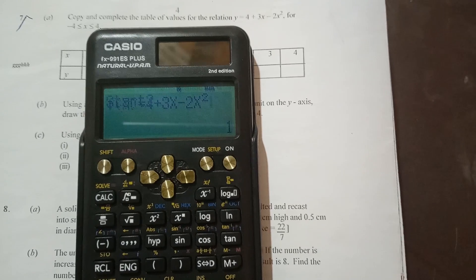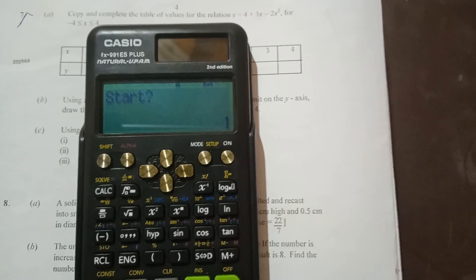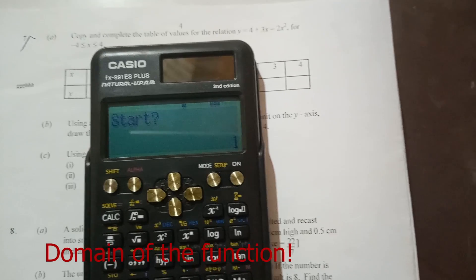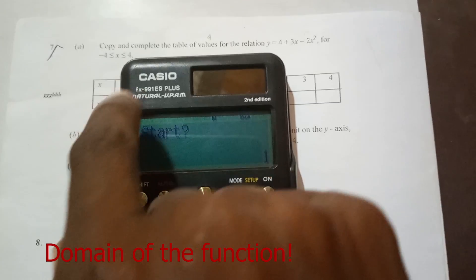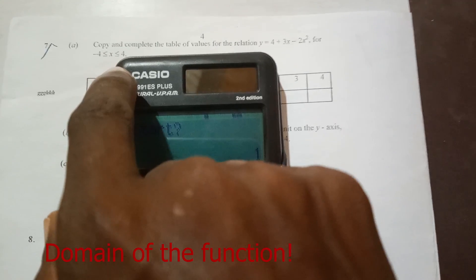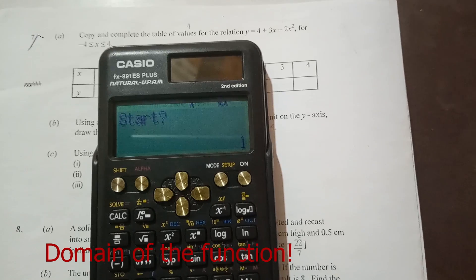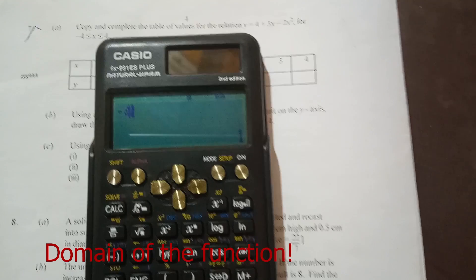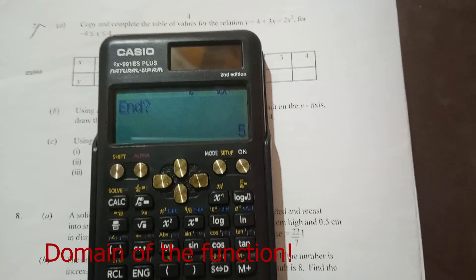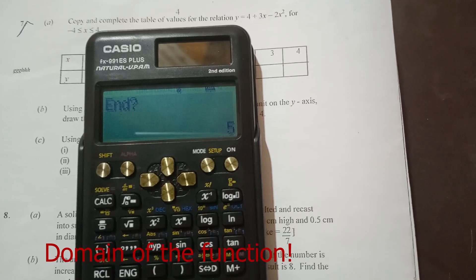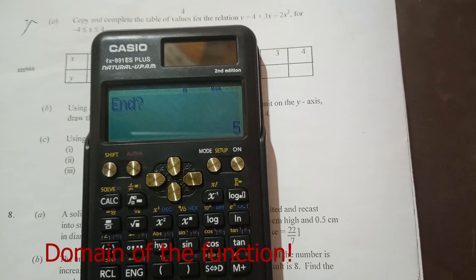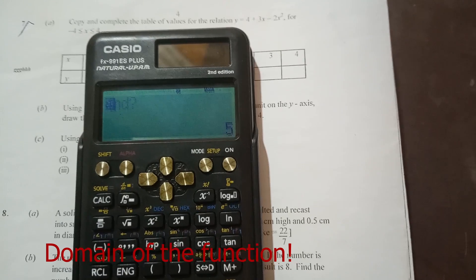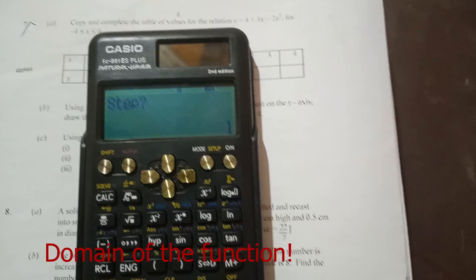Then now you press equal to. After pressing equal to, you have start there. Start means the interval - where is the interval beginning from? That is what is in the question here: negative 4 less than or equal to x less than or equal to 4. So your interval is beginning from negative 4. So you enter negative 4 there. Ignore the one; when you press equal to it will go away. Then it is asking where does it end. Your x values, where do they end? So it is negative 4 to positive 4, so we enter 4.